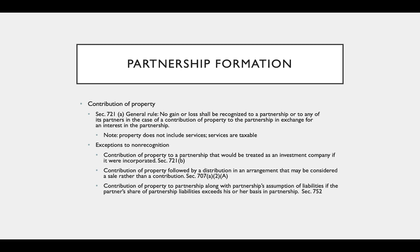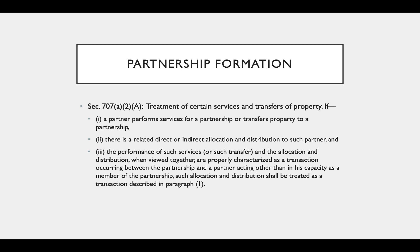There are exceptions to Section 721 non-recognition. First, contribution of property to a partnership that would be treated as an investment company if it were incorporated. Second, contribution of property followed by a distribution in an arrangement that may be considered a sale rather than a contribution. Third, contribution of property along with the partnership's assumption of liabilities where the partner's share of partnership liabilities exceeds his or her basis. We will talk about exceptions two and three in the following slides.